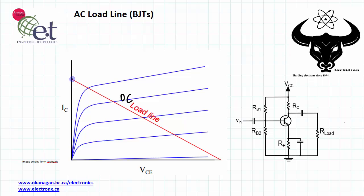At one extreme of the load line is the saturation current, or IC sat, and this represents the maximum current that you can have in the collector. That maximum current from a DC point of view is going to be this voltage,